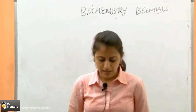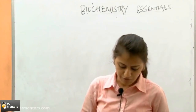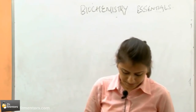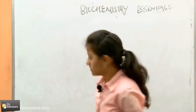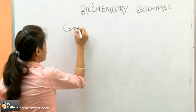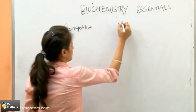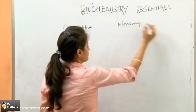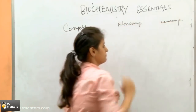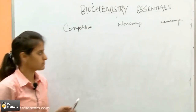Coming to the next question: in competitive inhibition, the relation of Km and Vmax is — so we have competitive inhibition, non-competitive inhibition, and uncompetitive inhibition. These are the three types of enzyme inhibition.